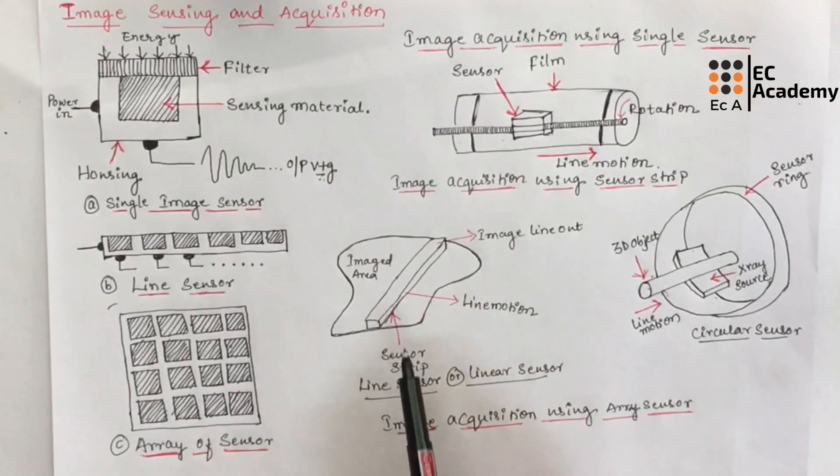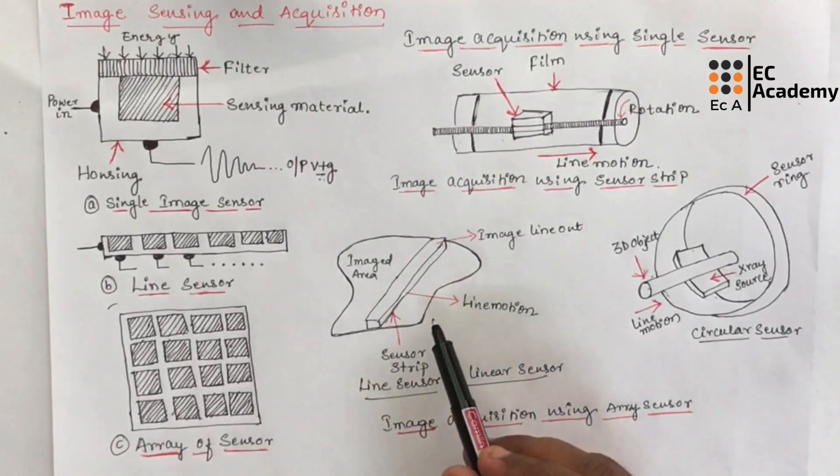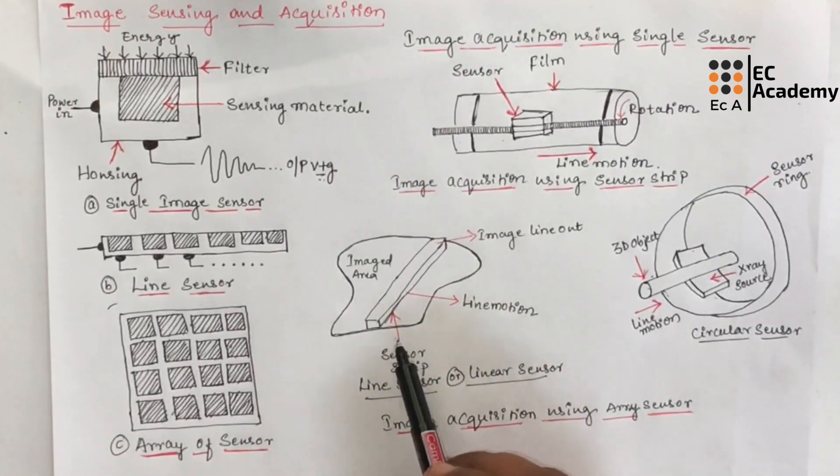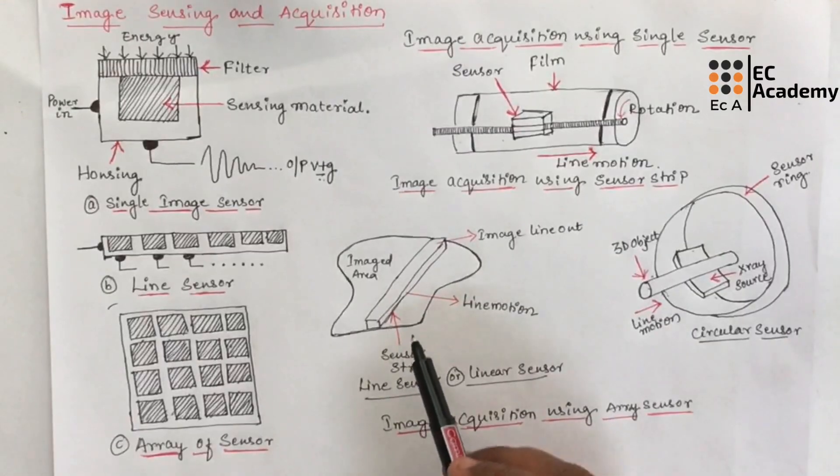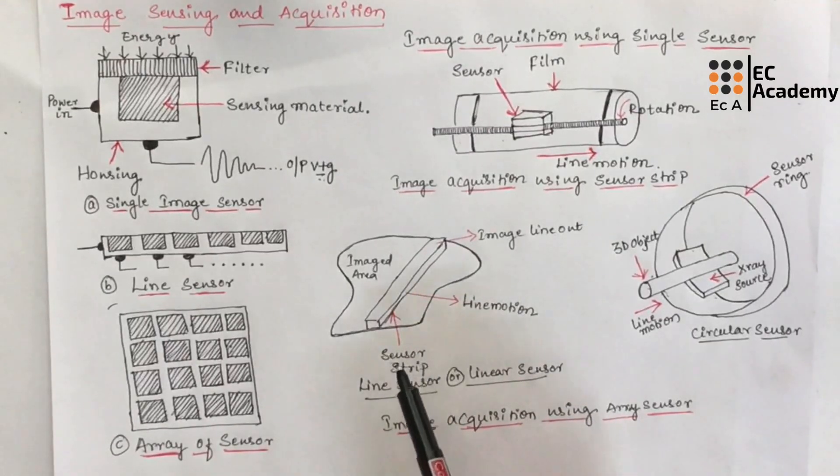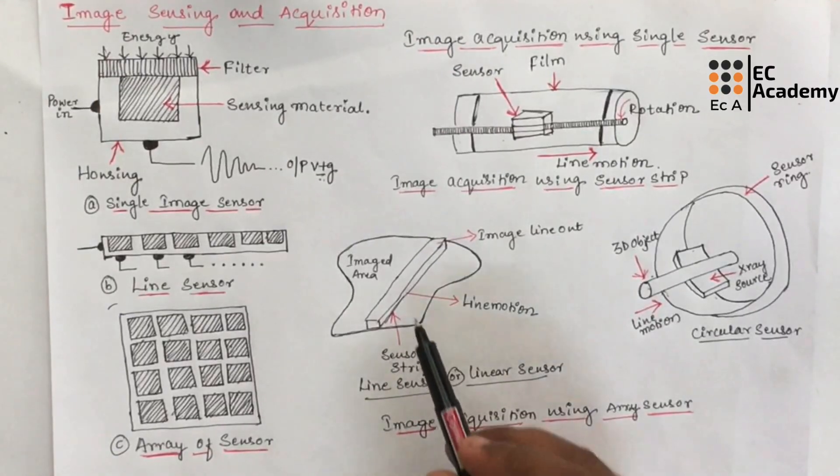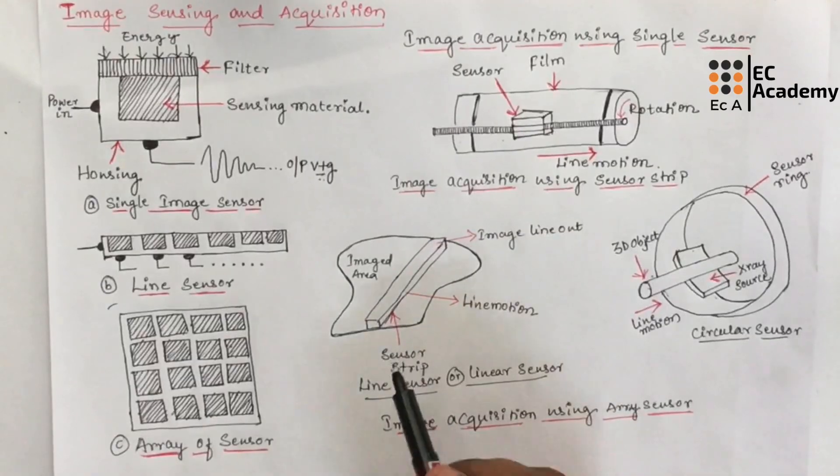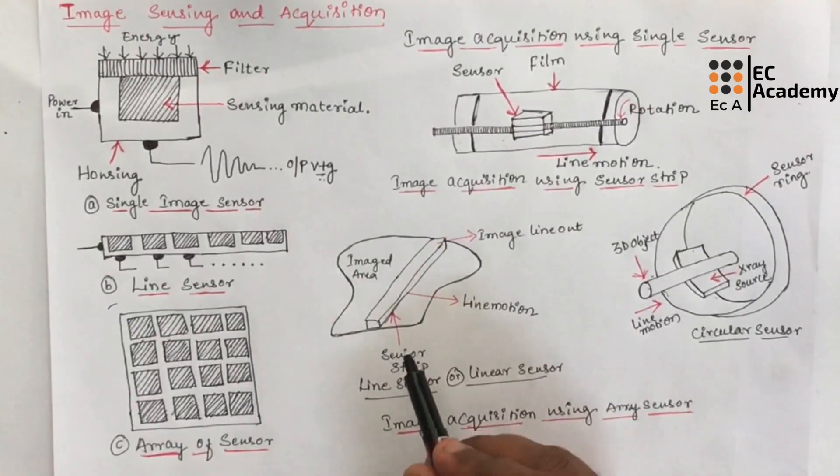Sensing device with more than 4000 or more inline sensors are possible. Inline sensors are usually used in airborne image applications. The image system is mounted on aircraft which flies at a constant altitude and speed over a geographical area that is to be imaged. One dimensional image sensor strips that responds to various bands of electromagnetic spectrums are mounted perpendicular to the direction of the flight.